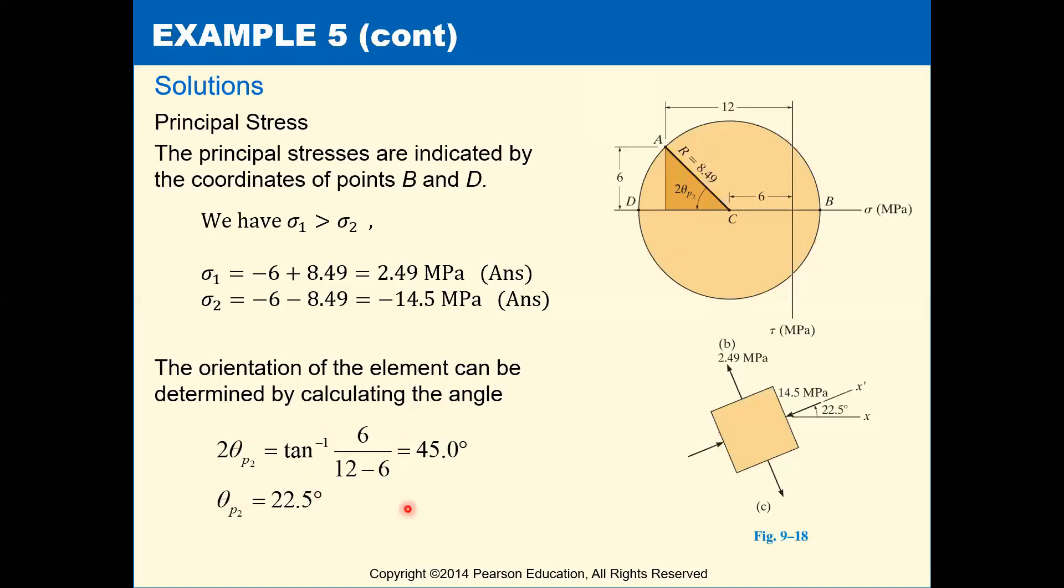And so then our theta P2 is 22.5 degrees. So when we draw our element, we're going to go from our original x-axis, which was our reference point, and if we rotate theta P2 on our element, that 22.5 degrees, that's going to take us to our second principal stress, sigma 2, which is that compressive 14.5 megapascals.